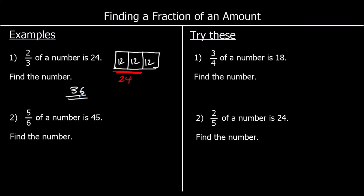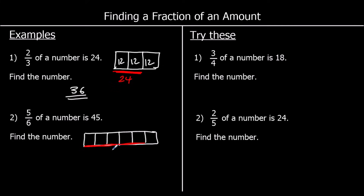Here's another question: five sixths of a number is 45. So we've got a number split into six bits, and we know five of them make 45. So if five bits make 45, each of them must be 45 divided by five, which is nine. So every bit must be worth nine. So the total number is six lots of nine, which is 54.